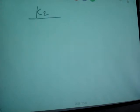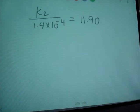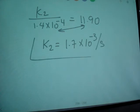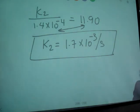K2, 1.4 times 10 raised to minus 4 and you get 11.90 and when you solve for K2, you multiply those two, you get 1.7 times 10 raised to minus 3 and unit is per second. So you can calculate K2 value. If activation energy, once you find and K1 is given, you can calculate K2 value.